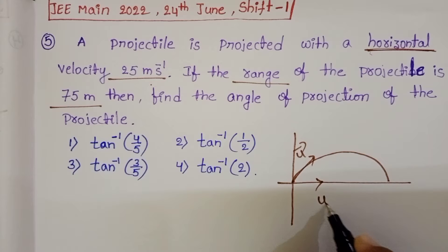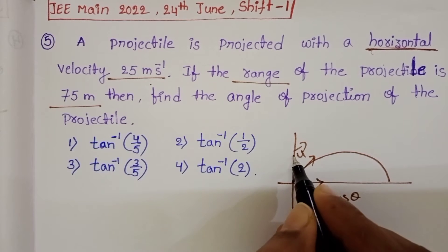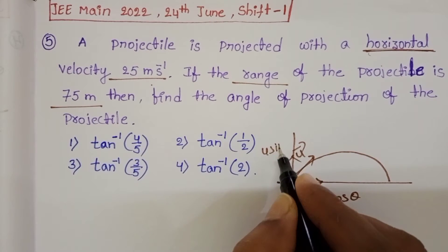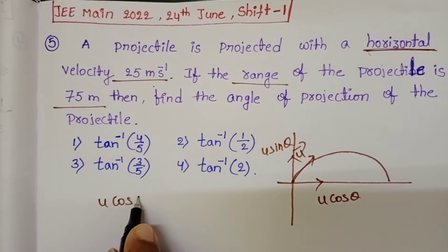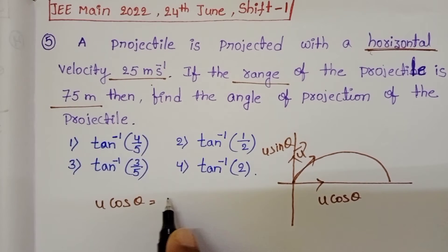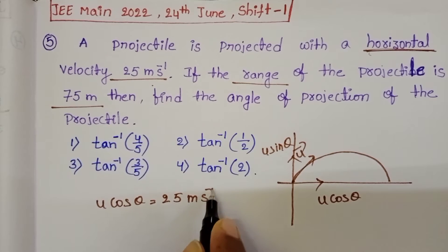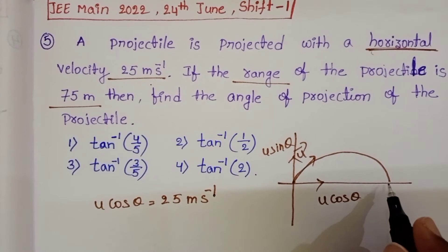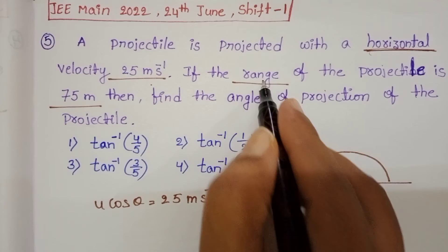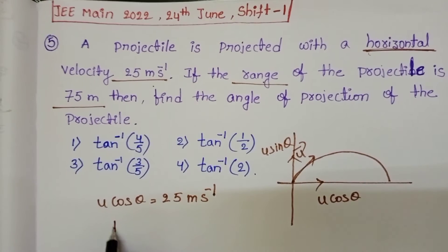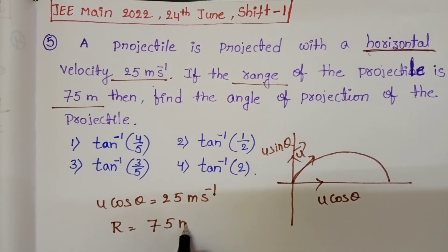The horizontal component of velocity u cos θ equals 25 meters per second. The maximum horizontal distance is called range, and in the given question, range equals 75 meters.